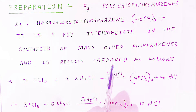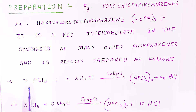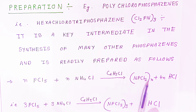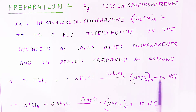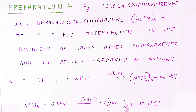It is readily prepared as follows: phosphorus pentachloride reacts with ammonium chloride in the presence of phenyl chloride to give n number of phosphazenes and HCl. For example, 3 phosphorus pentachloride reacting with 3 ammonium chloride in the presence of phenyl chloride gives hexachlorotriphosphazene and 12 HCl.